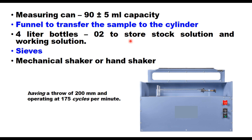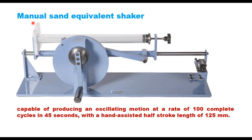Two 4-liter bottles are needed to store the stock solution and working solution. A sieve and shaker are also required. The shaker can be mechanical — with a throw of 200 mm and operating speed of 175 cycles per minute — or a manual sand equivalent shaker capable of 100 complete cycles in 45 seconds with a half stroke length of 125 mm. It can also be done by hand.